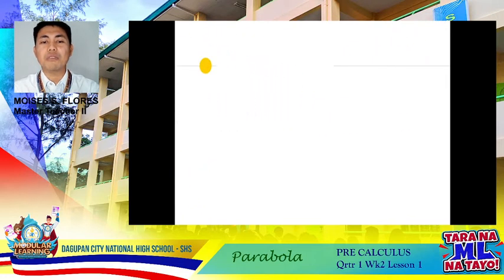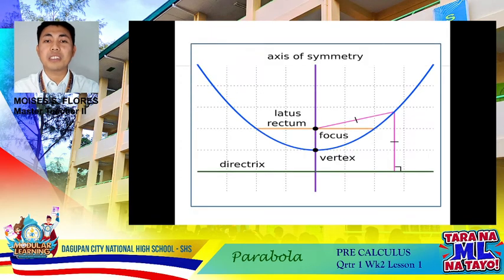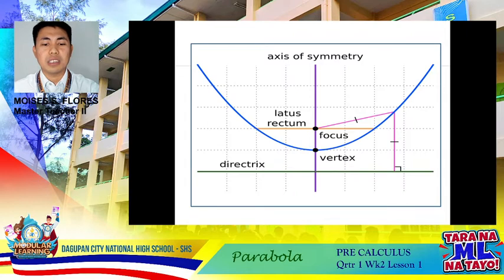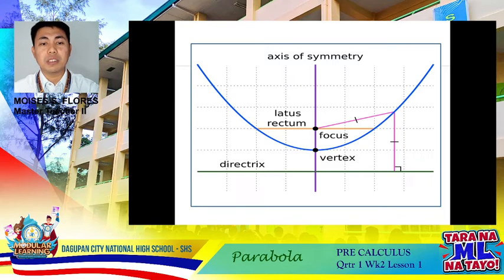Let's take a look at this diagram. Another term to be discussed today is the axis of symmetry. It is said to be the line through the focus perpendicular to the directrix. It divides the parabola into two parts, which are the mirror images of each other. If you take a look at the line shown in purple, that is the axis of symmetry.